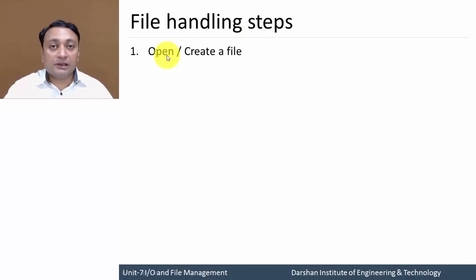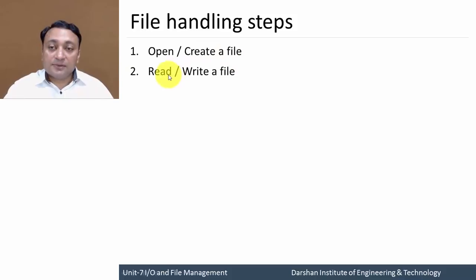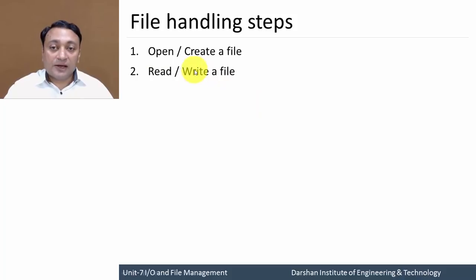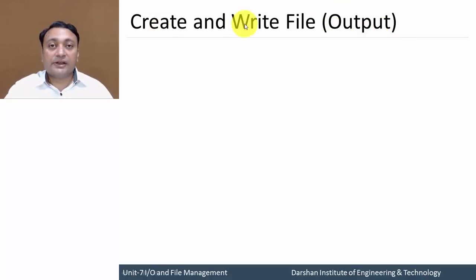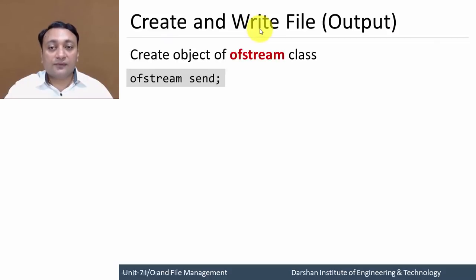Now we have discussed all the classes related to files. Next are the file handling steps. To deal with a file, first you need to open an existing file, or if it does not exist, create a new file. Second, you can read from that file or write some content to it. After performing any of these operations, you are supposed to close that particular file.